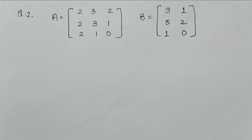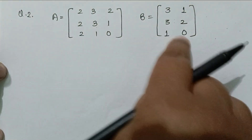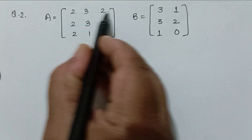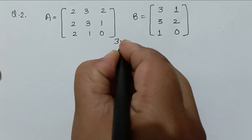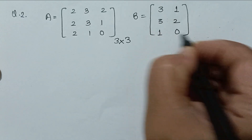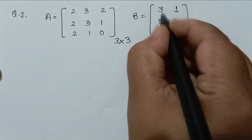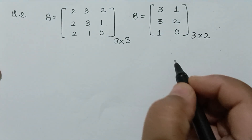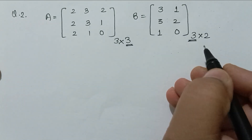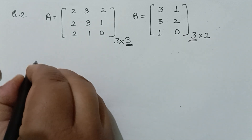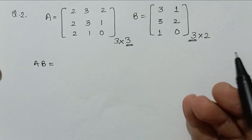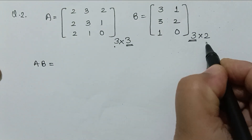Suppose we have two matrices A and B. The order of matrix A is 3 rows and 3 columns, and the order of matrix B is 3 rows and 2 columns. Since the number of columns of A equals the number of rows of B, we can multiply these matrices and find the value of AB. The order of the resulting matrix will be 3 x 2.